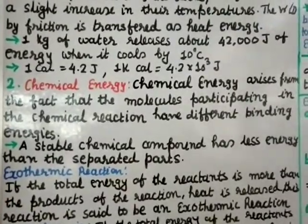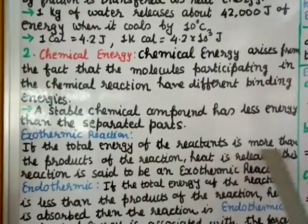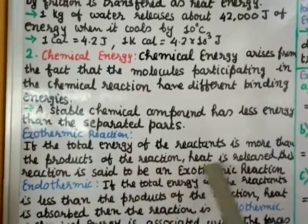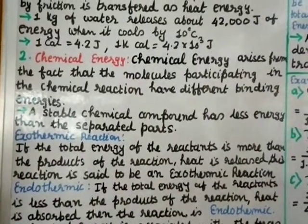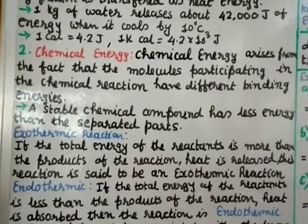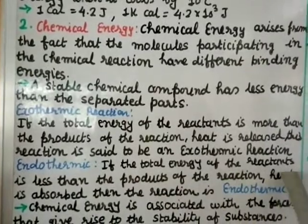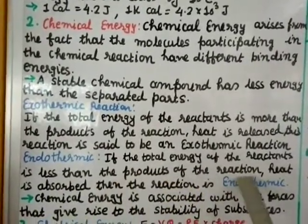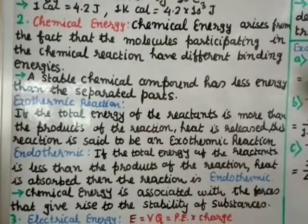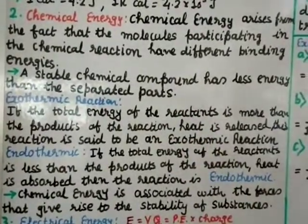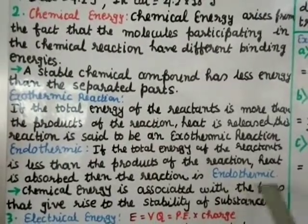Exothermic reaction: If the total energy of the reactants is more than the products, heat is released — this reaction is called an exothermic reaction. Endothermic reaction: If the total energy of the reactants is less than the products, heat is absorbed — this reaction is called an endothermic reaction.